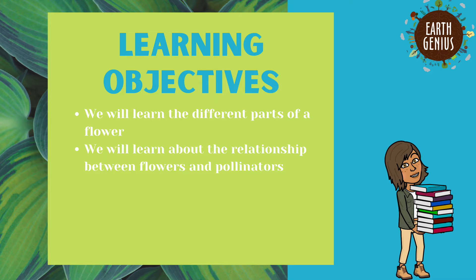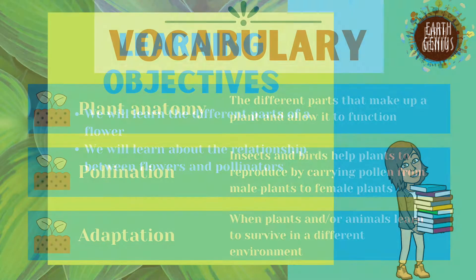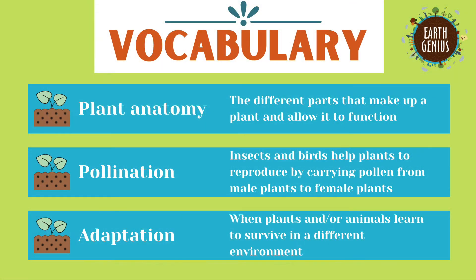In today's lesson, we will learn the different parts of a flower, and learn all about the relationship between flowers and pollinators. Grab your garden journal, because we're going to start off with the vocab. So take notes and follow along.